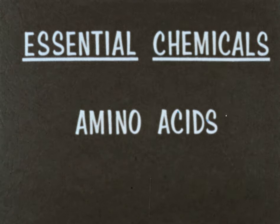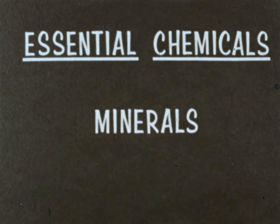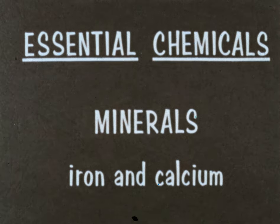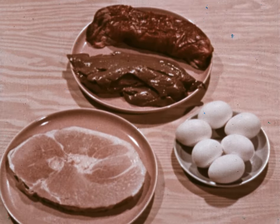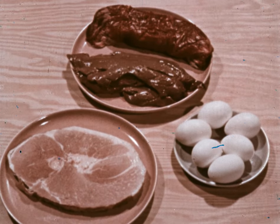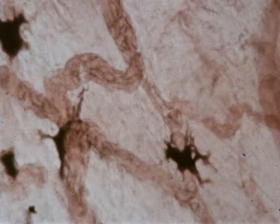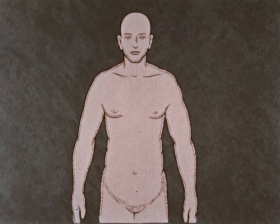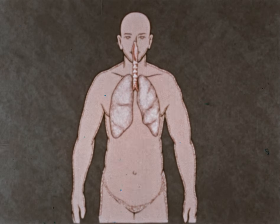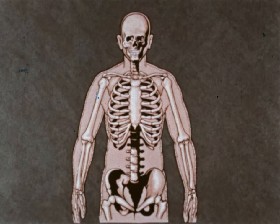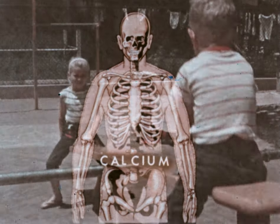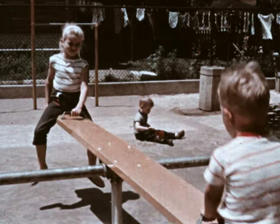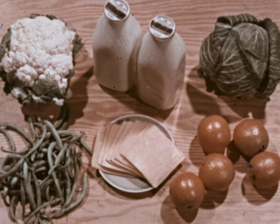Also aiding growth and repair is the second type of essential chemicals: minerals. Among these, the importance of iron and calcium can be most easily seen. Foods rich in iron are meats and eggs. After digestion, iron from these foods becomes one of the chief components of hemoglobin, which gives blood its color. Hemoglobin also plays a vital part in transporting oxygen from the lungs to the tissues of the body. Another system of the body, the skeletal system, uses the mineral calcium. Large amounts of calcium are needed during the early years of life for the formation of bones and teeth. Among the foods rich in calcium are milk, cheese, and most vegetables and fruits.